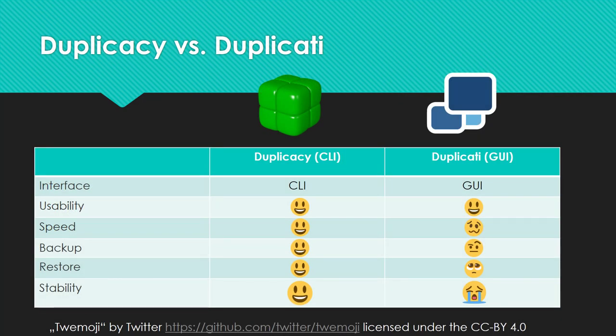Let's come to the differences. For this comparison, I compared the Duplicatee command line interface version with the graphical interface version of Duplicatee. I know that there are other versions for both applications, but this was the way I tried to use it. Most points are valid regardless of which version is used. I used both applications on a QNAP ARM device to backup about 500 GB of files.